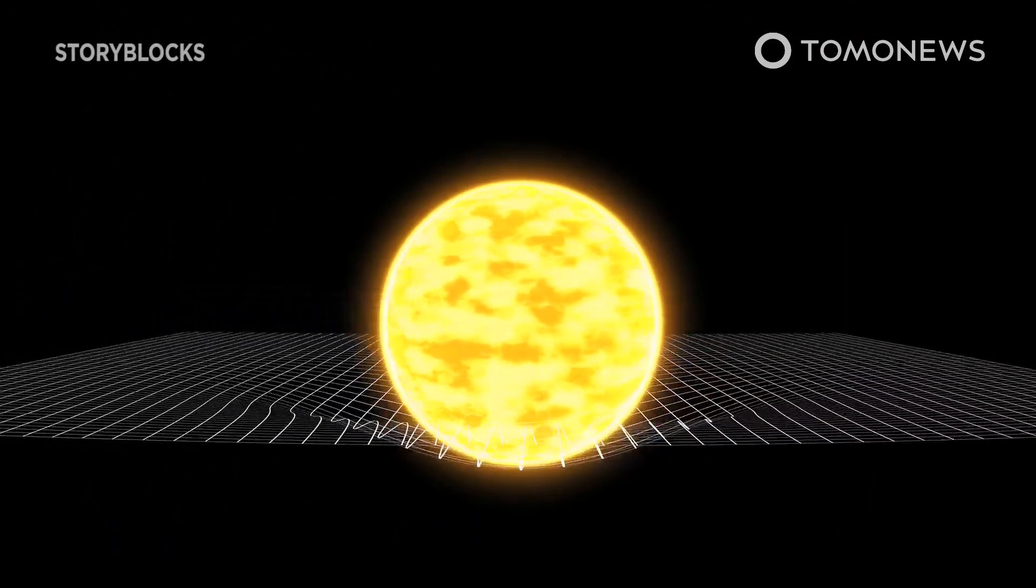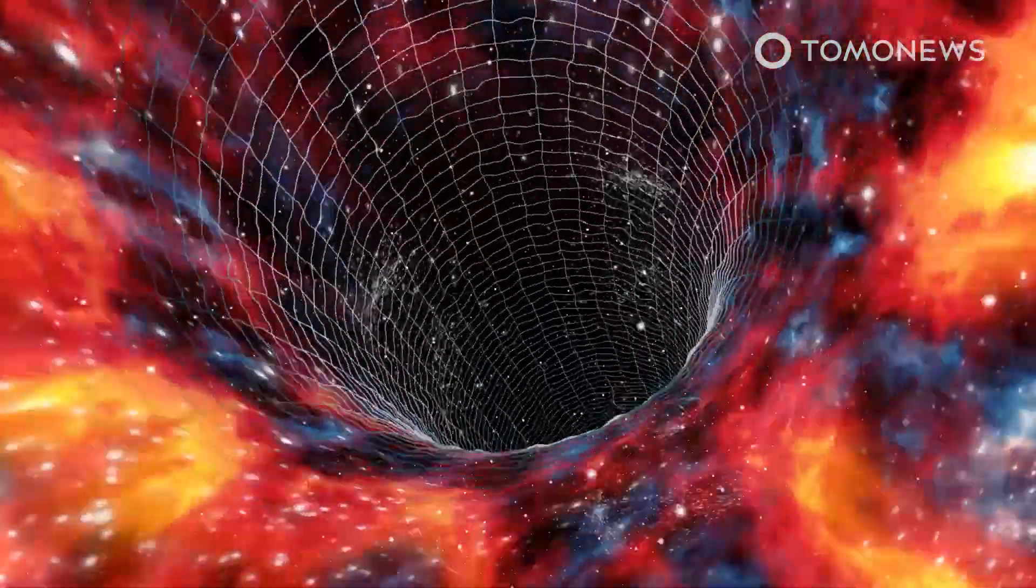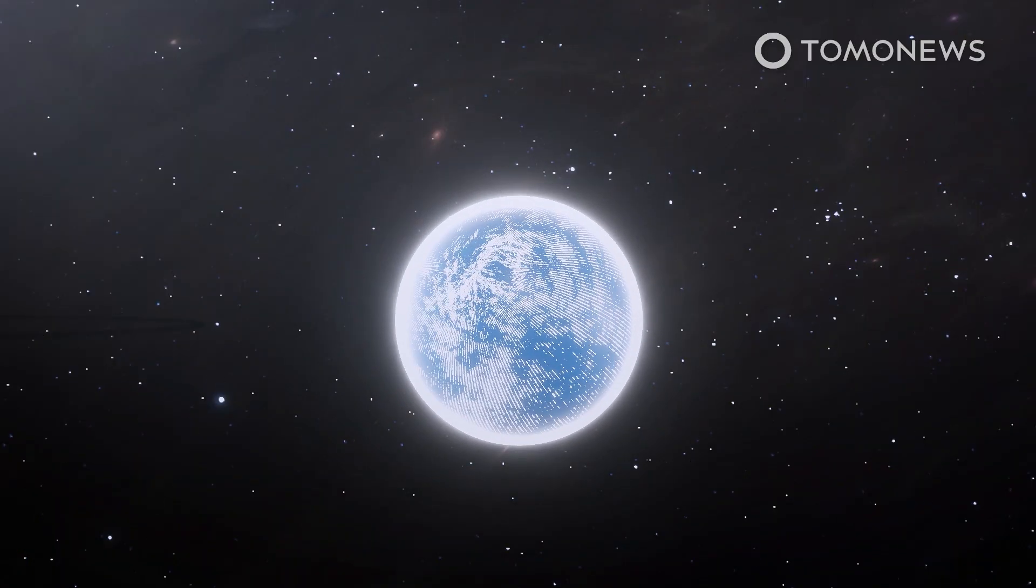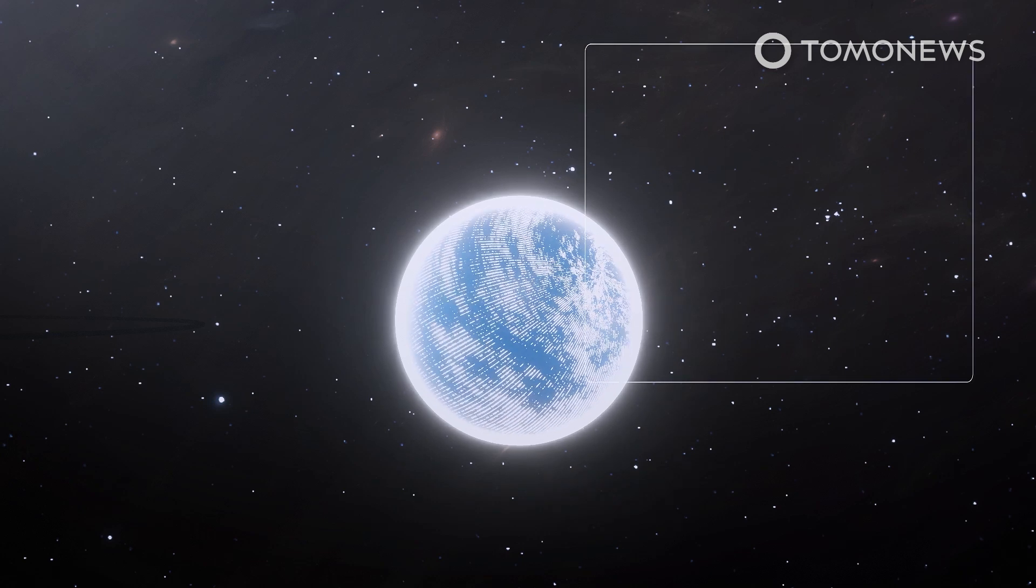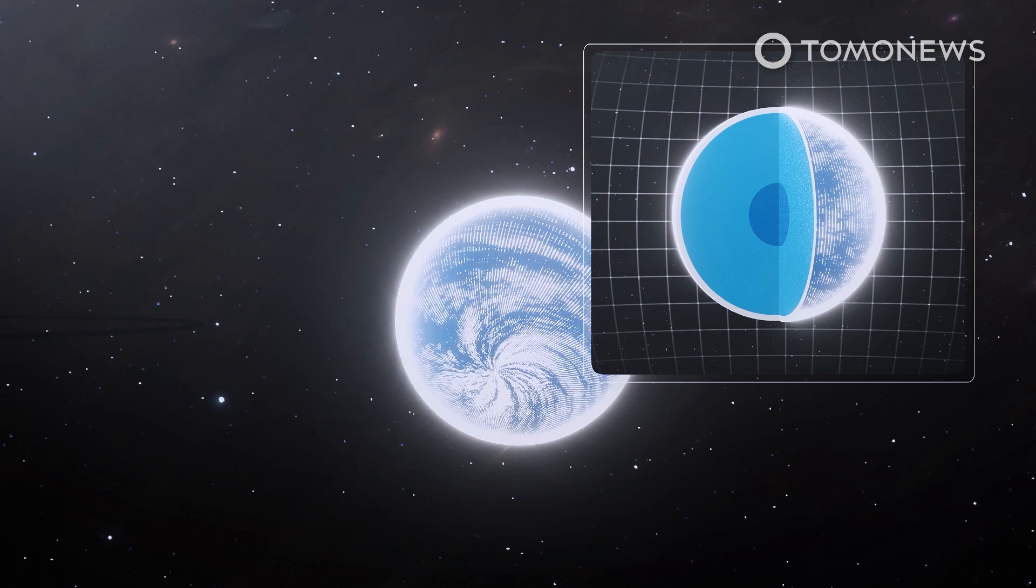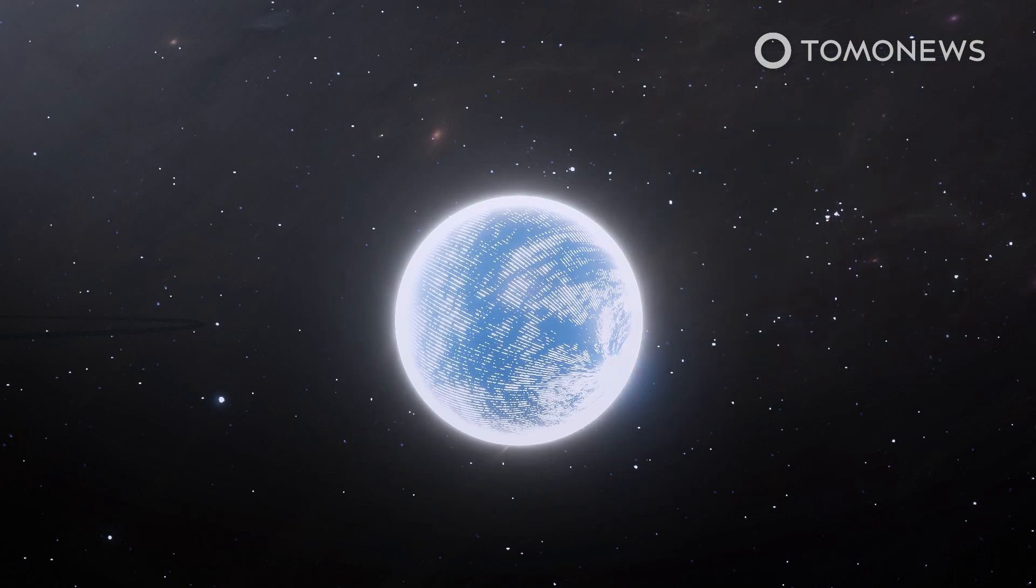Einstein's theory of general relativity has survived a major examination. Here's what you need to know. Einstein's theory of relativity has passed a huge test involving pulsar stars, extremely dense neutron stars that emit beams of radiation and particles from their magnetic poles.